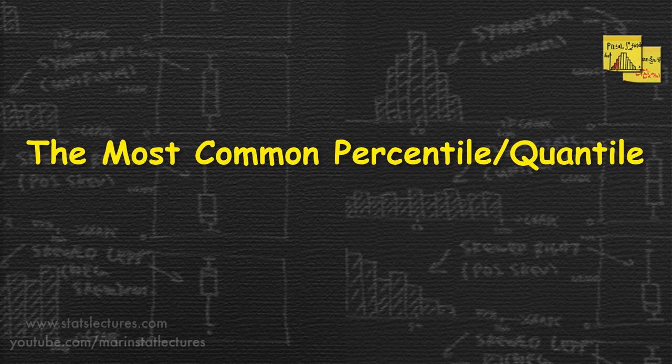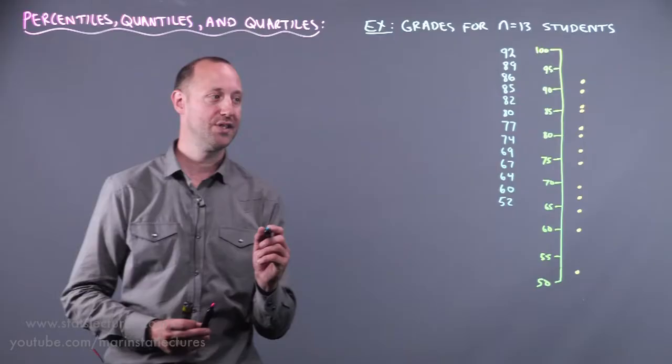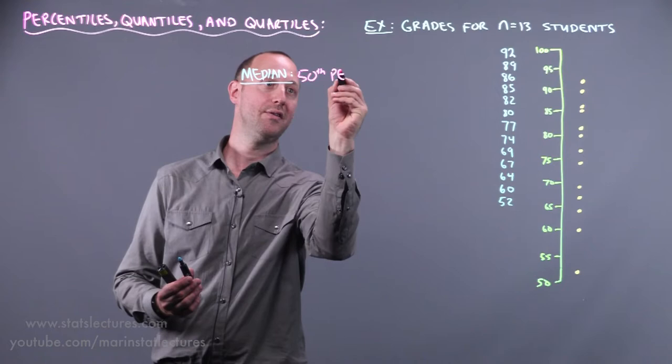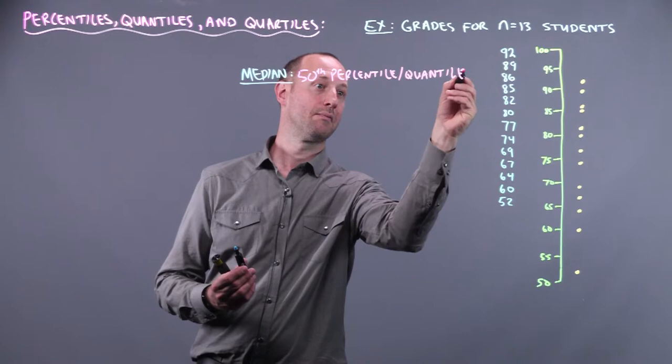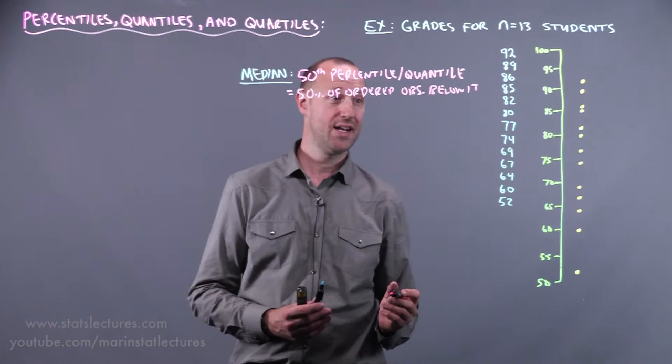So let's start with a specific or a commonly looked at percentile or quantile, the 50th percentile. So this gets a special name and this gets called the median. The median is just the 50th percentile or quantile. And this has 50% of the ordered observations below it. It's looking at which value cuts the data in half.